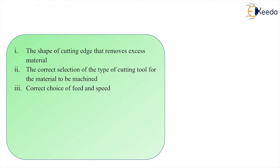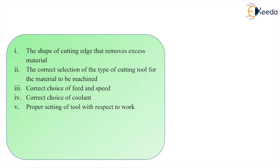Next, we have the correct choice of process parameters — feed, speed, and depth of cut — which is also very important. Fourth is the correct choice of coolant. And last is the proper setting of the tool with respect to the workpiece. To get this proper relation, we use standard work-holding devices such as chucks and vices for general purpose work, and jigs and fixtures for mass scale production.